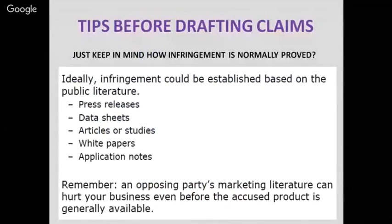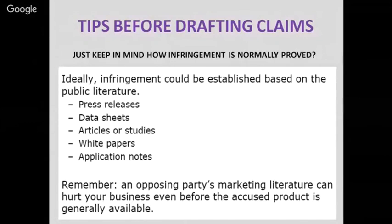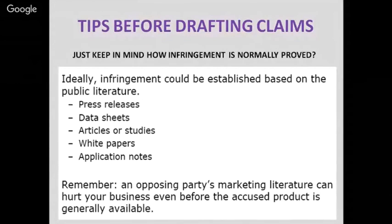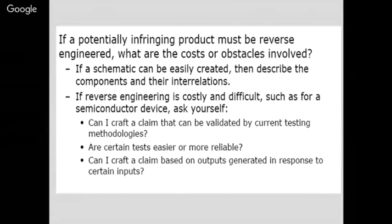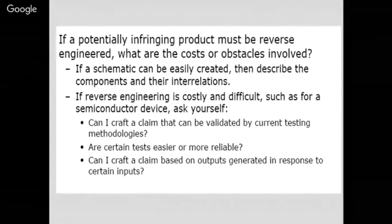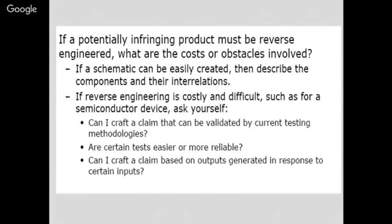Tips for drafting claims: ideally, infringement could be established based on public literature such as press releases, data sheets, articles, studies, white papers, or application notes — so we should not publish our work before filing the patent. We should be alert that opposing parties' marketing literature can hurt our business. If a potentially infringing product must be reverse engineered, consider the costs and obstacles involved. If the schematic can be easily created, describe the components and their interrelations. For semiconductor devices where reverse engineering is costly, ask whether you can craft a claim that can be validated by current testing methodologies.